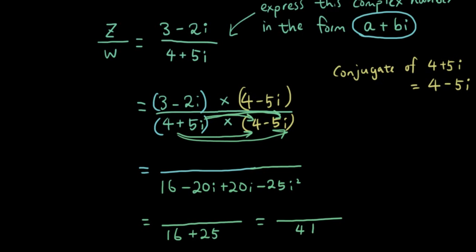Now let's do the top part. So we got 3 by 4 is 12, 3 by negative 5 is negative 15i minus 8i plus 10i squared, because negative 2 times negative 5 is positive 10. So then I have 12 minus 15 minus 8, that's negative 23i minus 10 because i squared is negative 1.